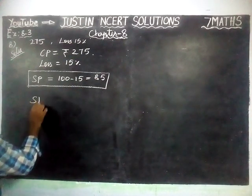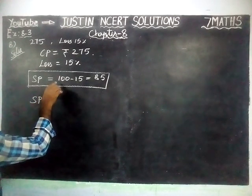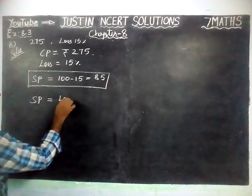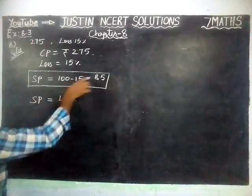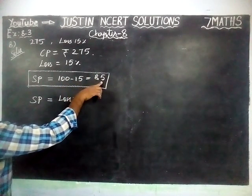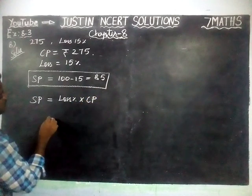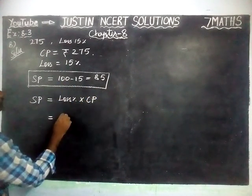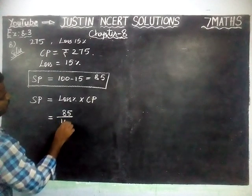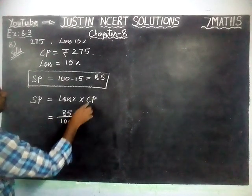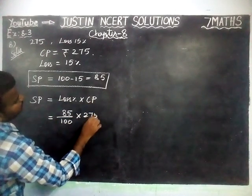So, sale price is equal to the loss percentage formula — that is, for Rs. 100 we found 85. So, sale price equals 85 divided by 100 into cost price, which is 275.